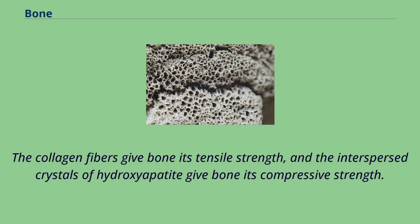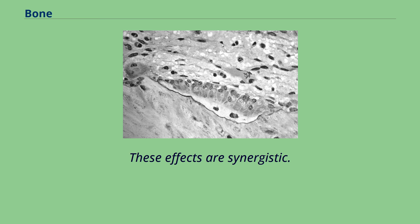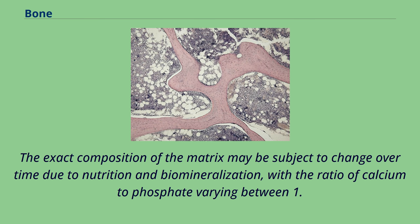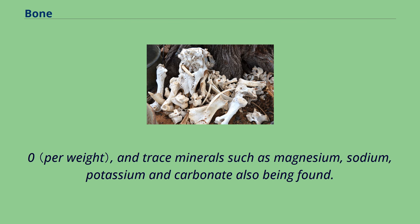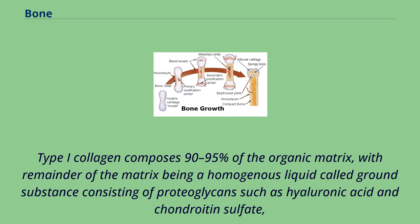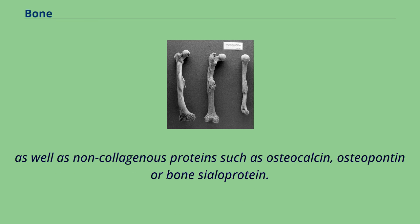The collagen fibers give bone its tensile strength, and the interspersed crystals of hydroxyapatite give bone its compressive strength. These effects are synergistic. The exact composition of the matrix may be subject to change over time due to nutrition and biomineralization, with the ratio of calcium to phosphate varying between 1.3 and 2.0, and trace minerals such as magnesium, sodium, potassium, and carbonate also being found. Type I collagen composes 90–95% of the organic matrix, with the remainder being a homogeneous liquid called ground substance consisting of proteoglycans such as hyaluronic acid and chondroitin sulfate, as well as non-collagenous proteins such as osteocalcin, osteopontin, and bone sialoprotein.